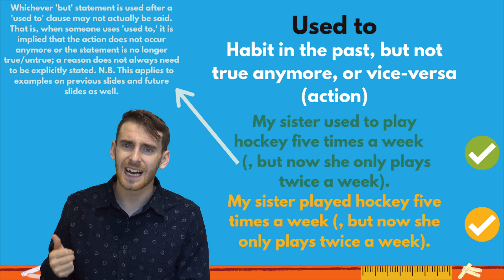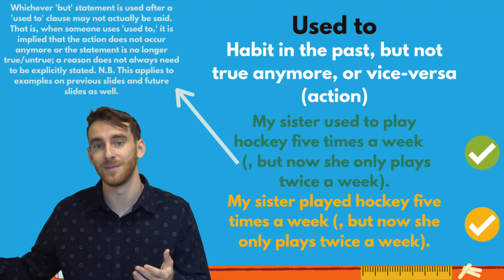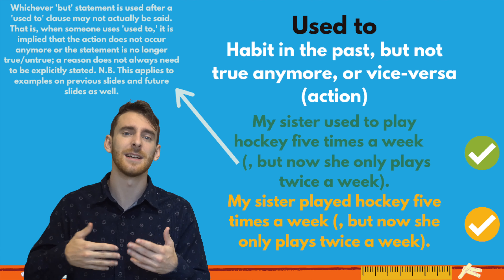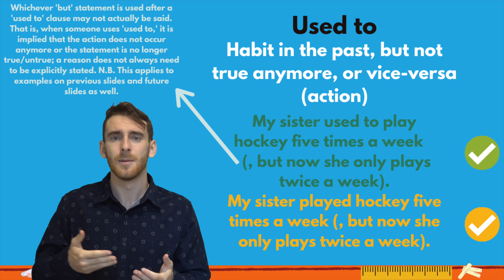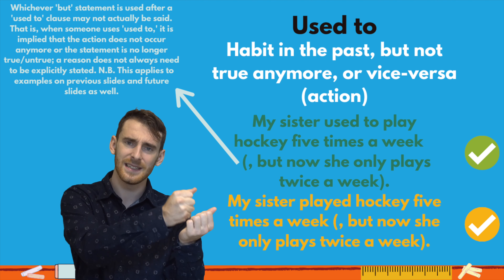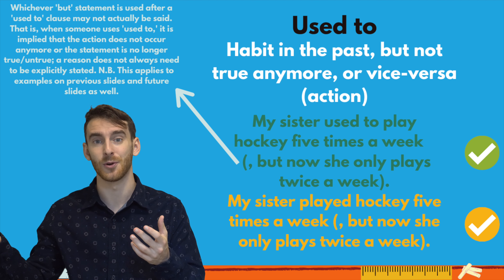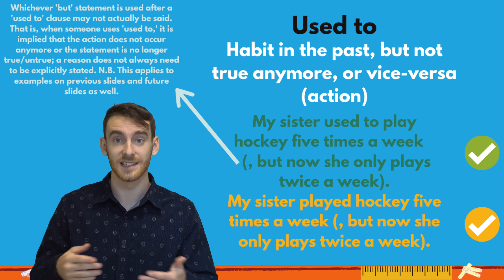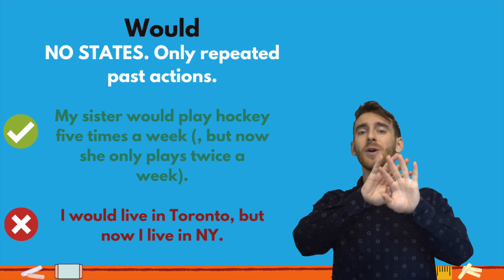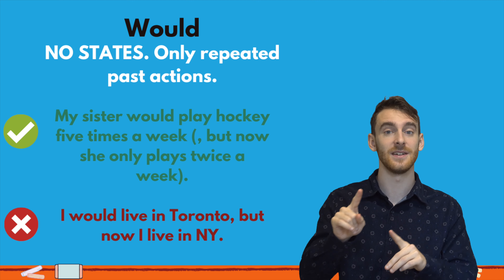'Used to' can also be used for actions. For example, 'My sister used to play hockey five times a week.' So a repeated action — something you've done a lot — and maybe you don't do it anymore, or you do it less now. 'My sister used to play hockey five times a week, but now she only plays twice a week.' So it's a habit in the past, and it's not true anymore. We can use 'used to' like that as well.